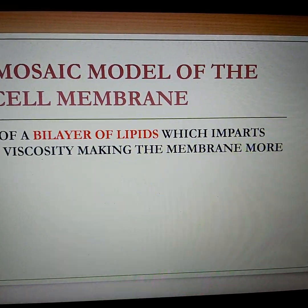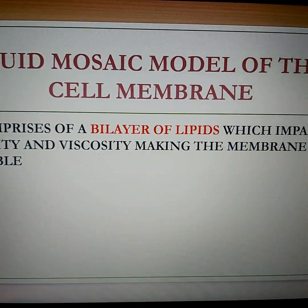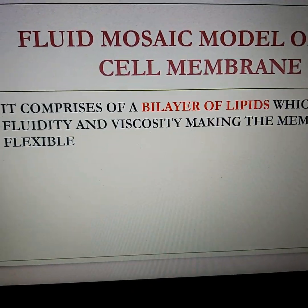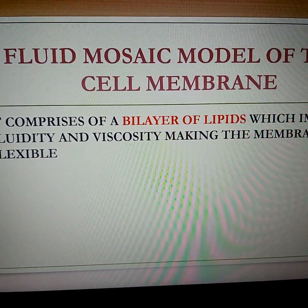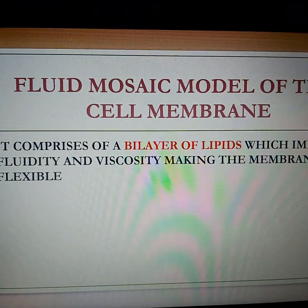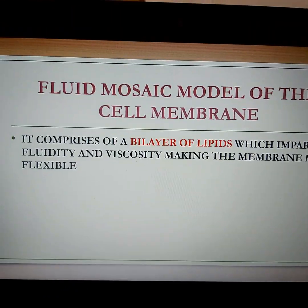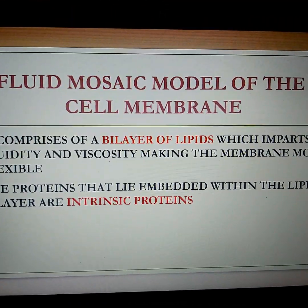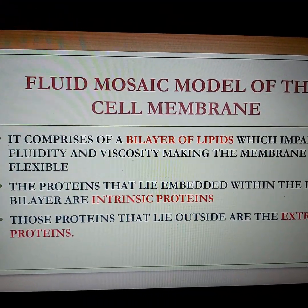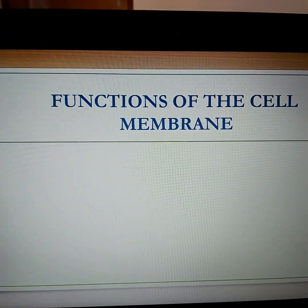Chemically, the cell membrane comprises a bilayer of lipids, and it is due to the presence of these lipids that the cell membrane has fluidity and viscosity, making the membrane flexible. That is why unicellular organisms like amoeba can project out pseudopodia, engulf nutrients, and remove waste from their bodies — because of the flexibility of the cell membrane, they can mold their shapes accordingly. Had it been a rigid layer, this would not have been possible. The proteins embedded within the lipids are called intrinsic proteins, whereas those lying outside are called extrinsic proteins.